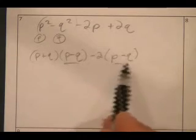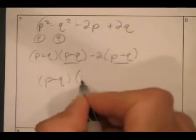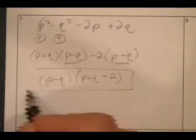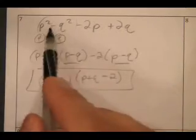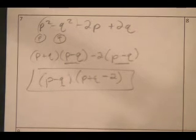Oh, look at this. Both have a common term here. So I can factor out the P minus Q. What's left on this side would be P plus Q. And then this would be minus two. Look at that. Taking this one, two, three, four terms and written as a product of two. So it's been completely factored.